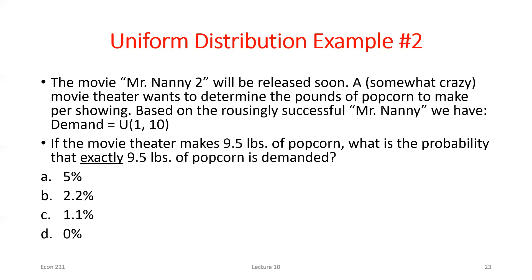The density function gives probability zero for that one specific value. We can only start seeing positive probabilities when we look over an interval — even a very small one like 9.49 to 9.51. But we can't find the probability of any one exact value with a truly continuous random variable.